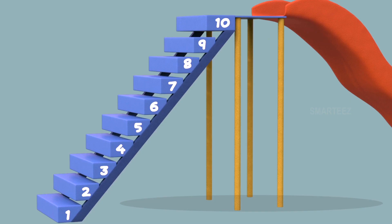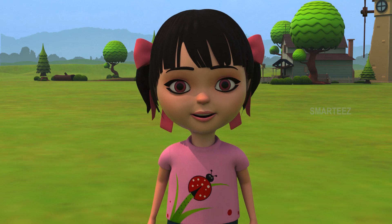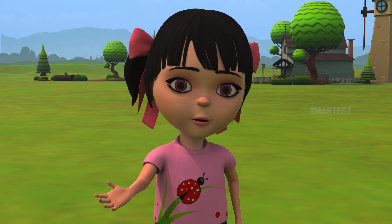Let me explain. When the music stopped, the yellow bunny was on step number 5 and the pink bunny was on step number 7. We see step number 5 is lower than step number 7. We call this as 5 is less than 7. So, when a number is lower than some other number, we call it less than the other number. This round goes to the yellow bunny.